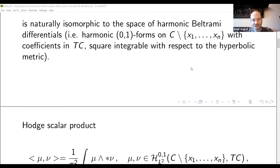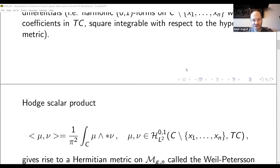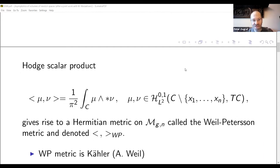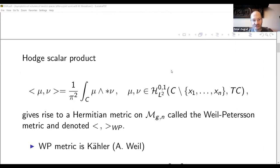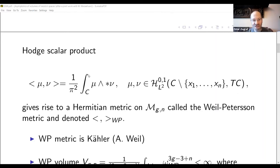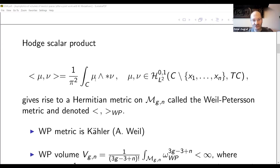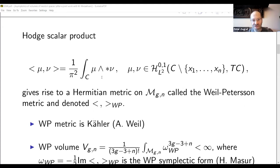So, this space carries a natural scalar product, which is called the Hodge scalar product. This integral here is taken over the curve, and the integrand is nu times nu bar, which is a function that is integrated with respect to the hyperbolic area form on C. So we have a scalar product on each tangent space, which depends smoothly on points in the modular space. And therefore, it gives rise to the Hermitian metric on the modular space M_{g,n}.